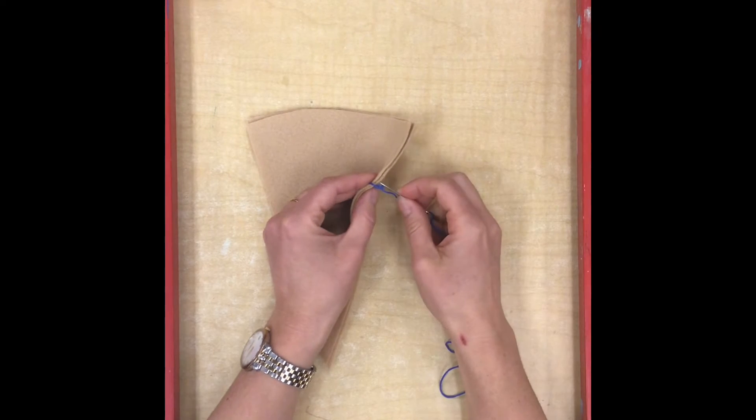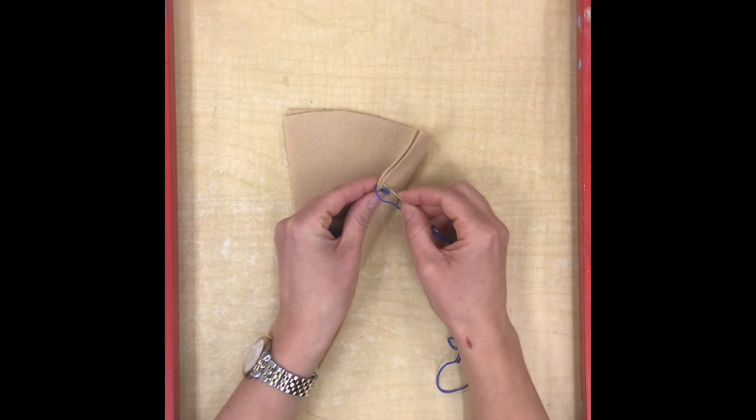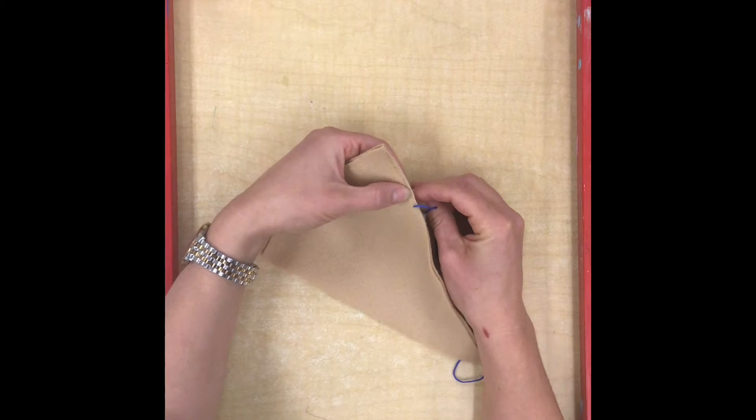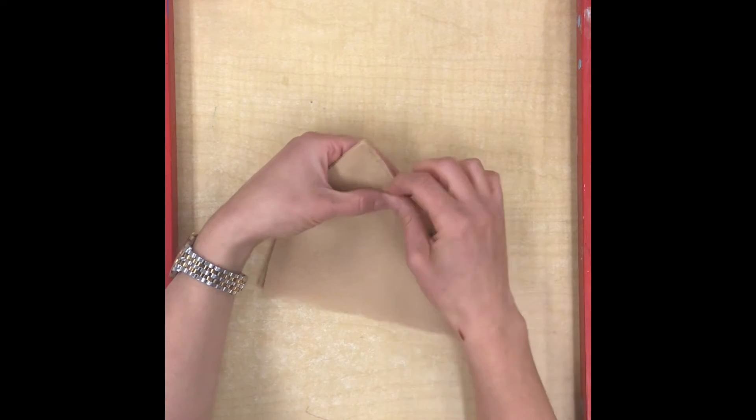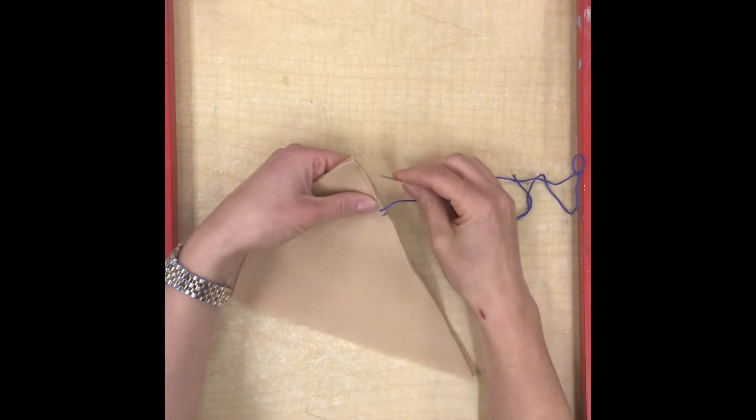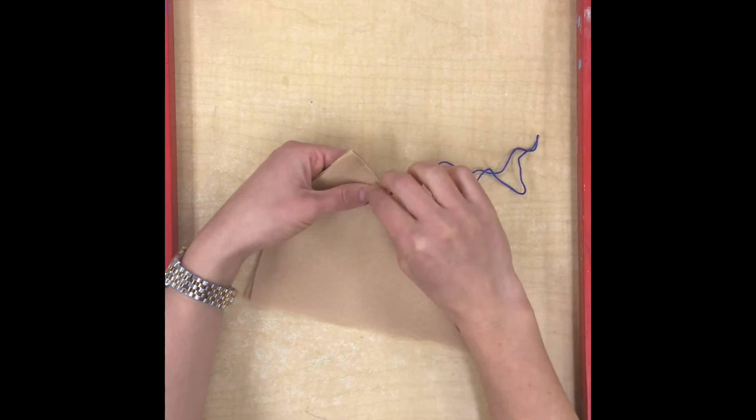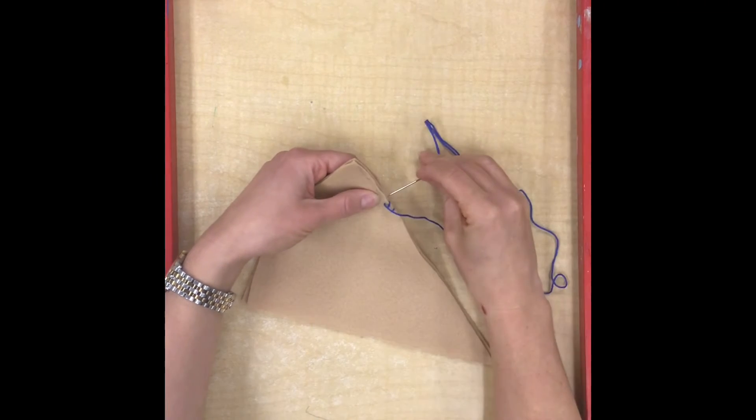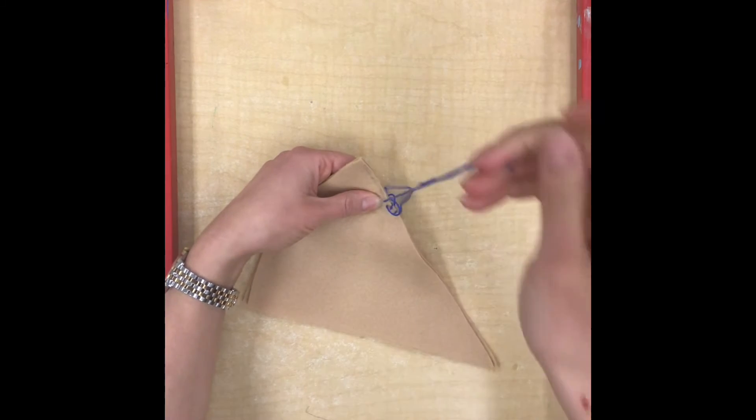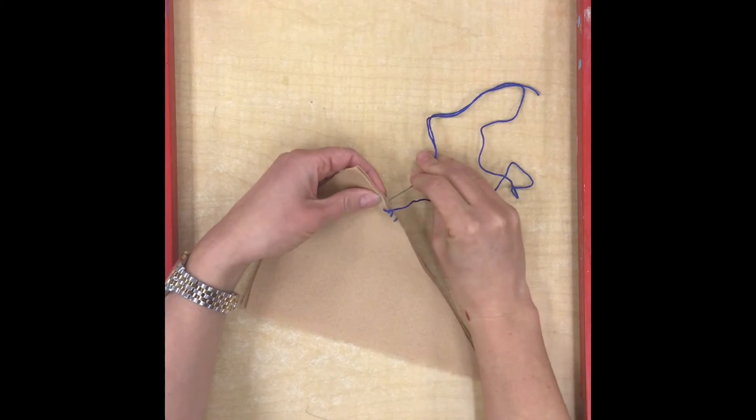Then I'm going to come up from the bottom again and it's a little tricky because you might have to poke your needle a couple times to get it to come up in the place where you want it to. Then I'm going to pull it all the way through again. Same step: go up from the bottom, pull it all the way through, and I'm making a whip stitch that wraps around the edge of my fabric. This is going to hold the two pieces of felt together really well.